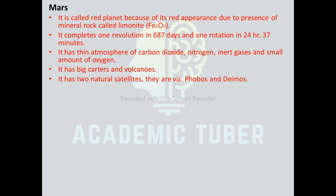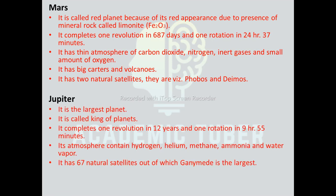Jupiter: it is the largest planet, also known as the king of planets. It accomplishes one revolution in 12 years and one rotation in 9 hours 55 minutes. Its atmosphere contains hydrogen, helium, methane, ammonia, and water vapor. It has 67 natural satellites, out of which Ganymede is the largest.